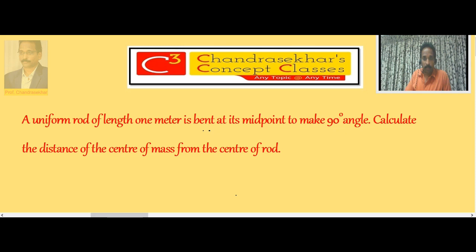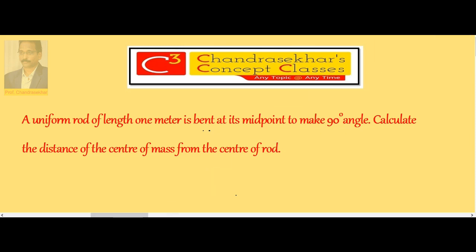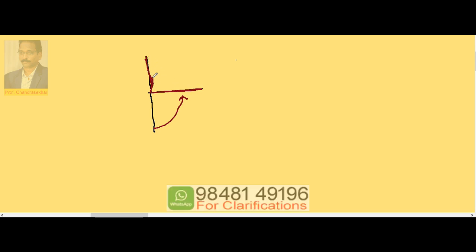What is the distance of the center of mass from the center of the rod? Imagine a uniform metal rod. Say this is a uniform rod. It is bent at the midpoint. If I say this is the midpoint, now this side is rotated like this so that the new rod is now like this. This is the new rod.